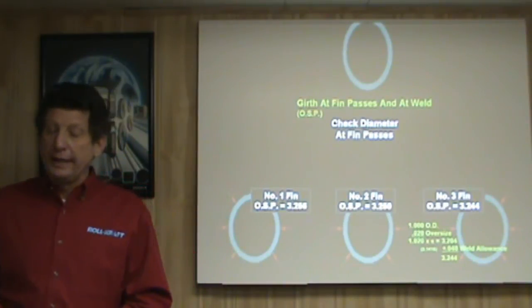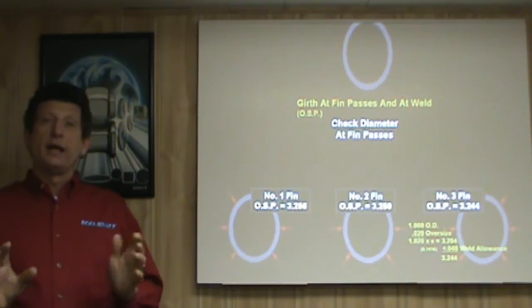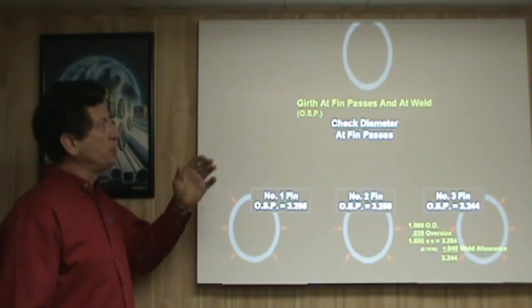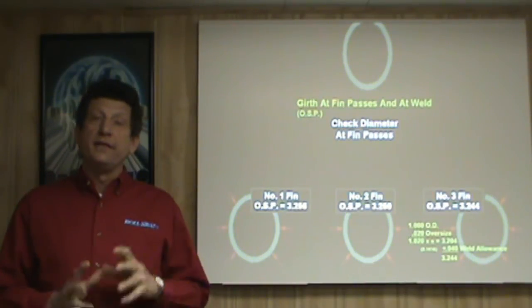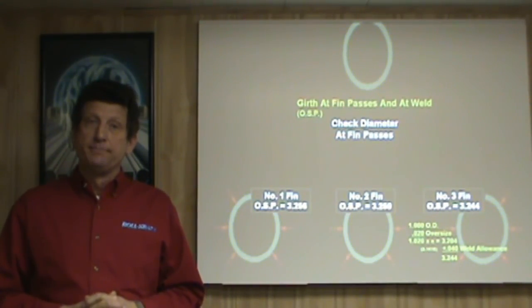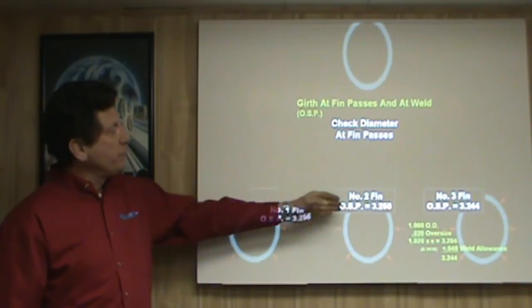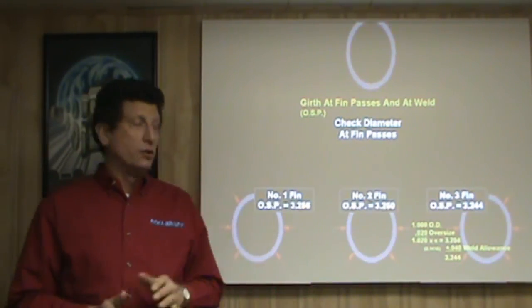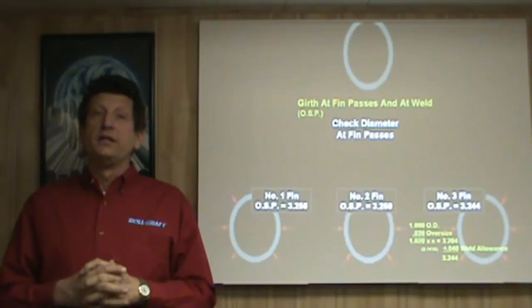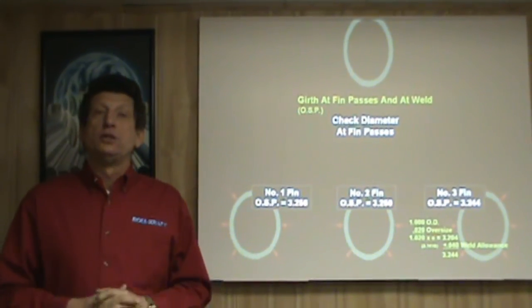Once we have our strip width in place and our tooling designed accordingly, it's important that we follow the setup chart and set the breakdowns and the fin passes the way the tooling's been designed. Making sure that we have the right outside periphery out of each and every fin pass, the right tube size, so that we can deliver that proper size to the welder.